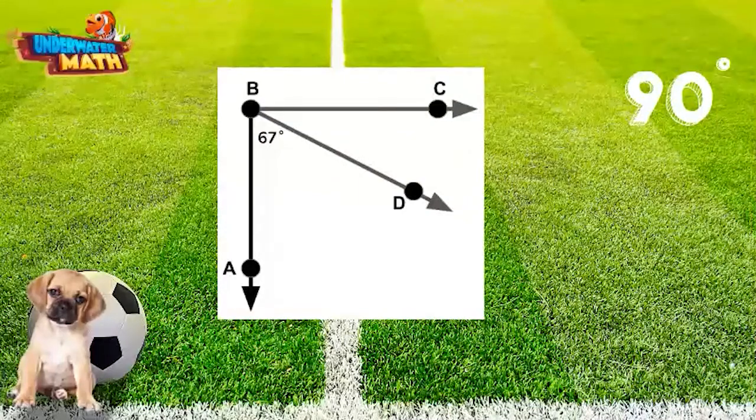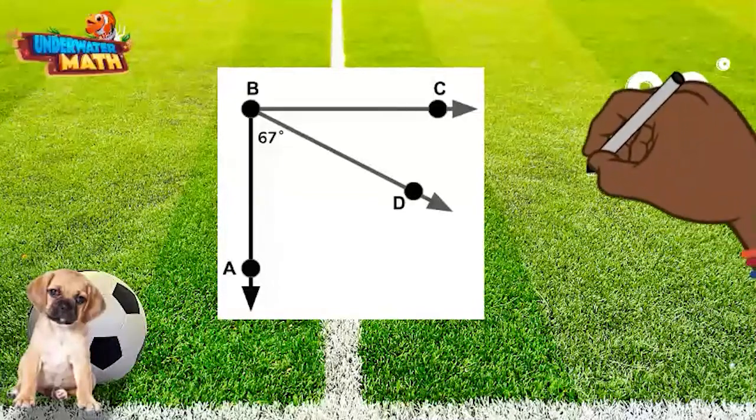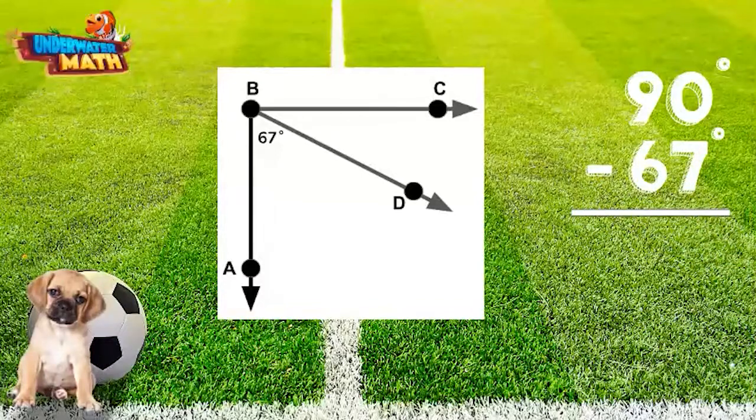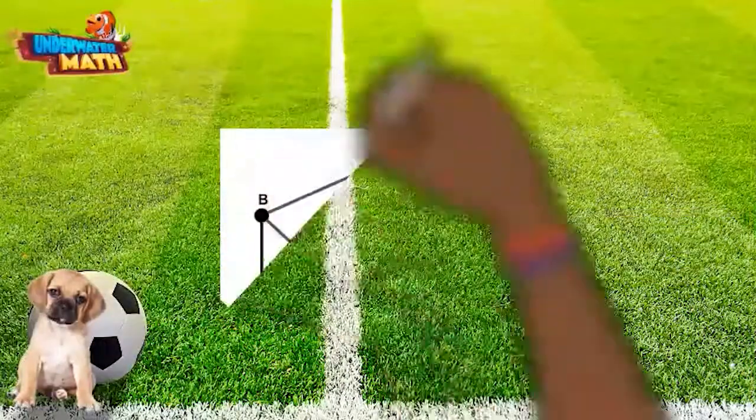We know part of this angle ABD is 67 degrees. What is the measure of angle CBD? 90 degrees minus 67 degrees equals 23 degrees. Angle CBD measures 23 degrees.